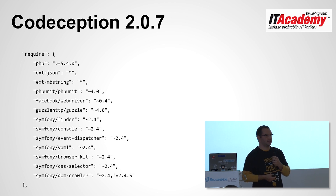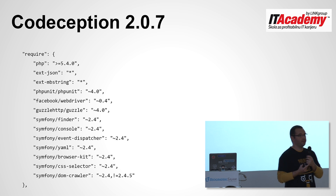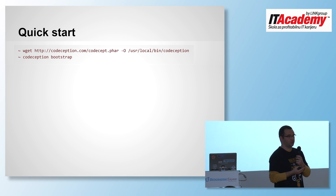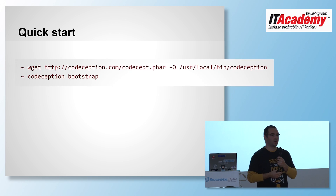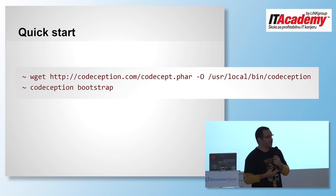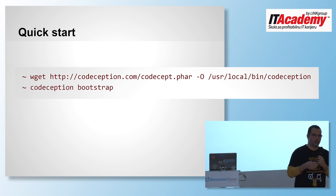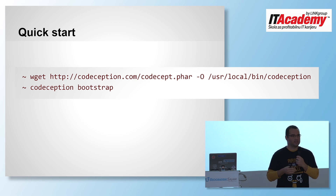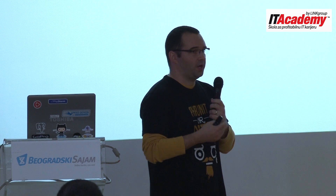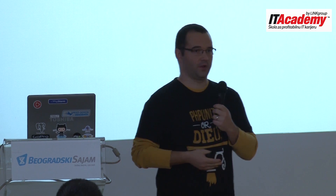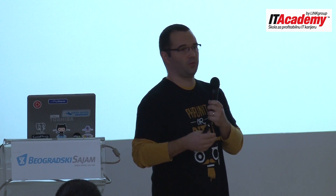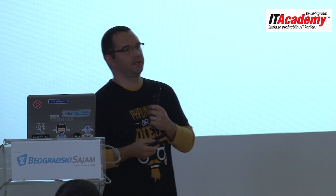To start using Codeception you just download one phar file. I usually put it in a shared folder so I can access it from anywhere, then run 'codecept bootstrap.' This creates the test folder, configuration files, example files, and modifies your .gitignore. From this point you're ready to roll. Running 'codecept run' with no tests gives you green — zero tests, all passed.